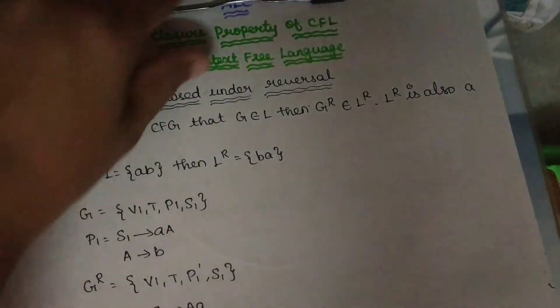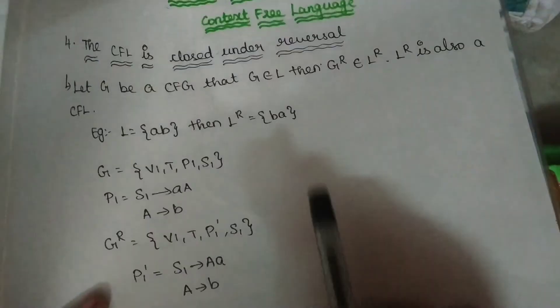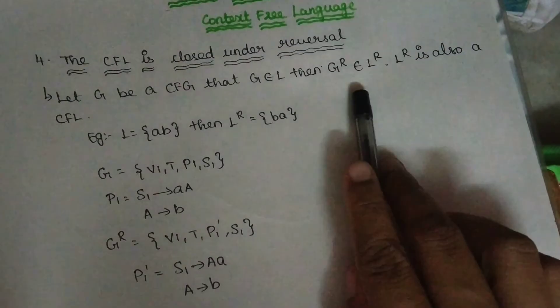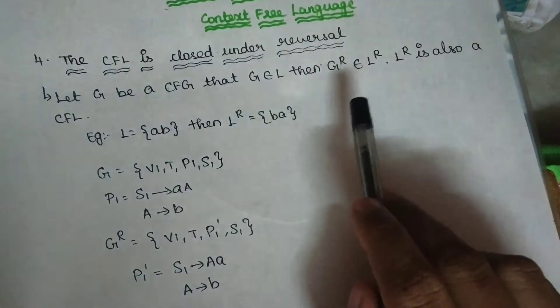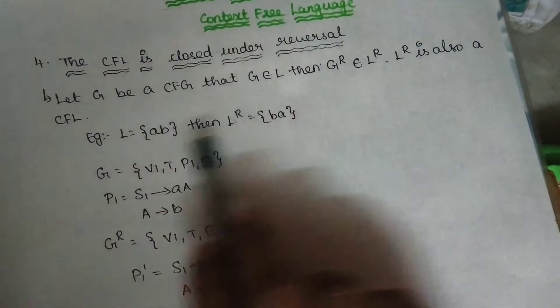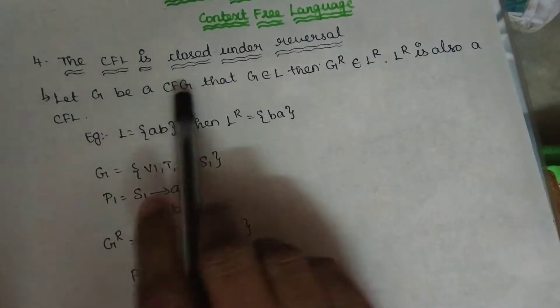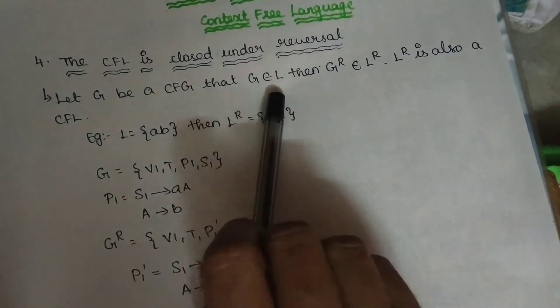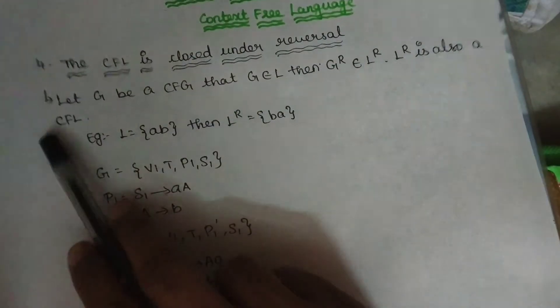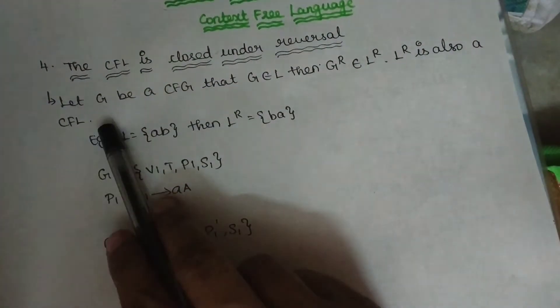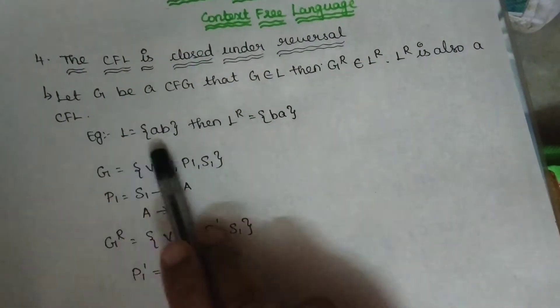Next is reversal. If you know what reversal is — one of the strings is called its reverse. If you look at a language, if you look at the strings and reverse them, that is still a context-free language.